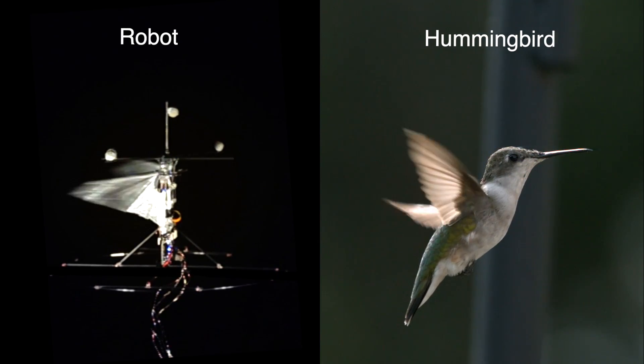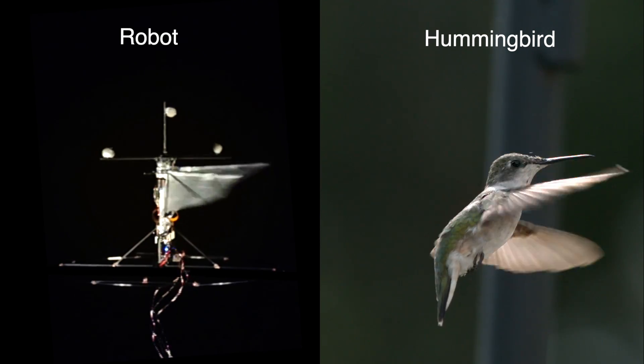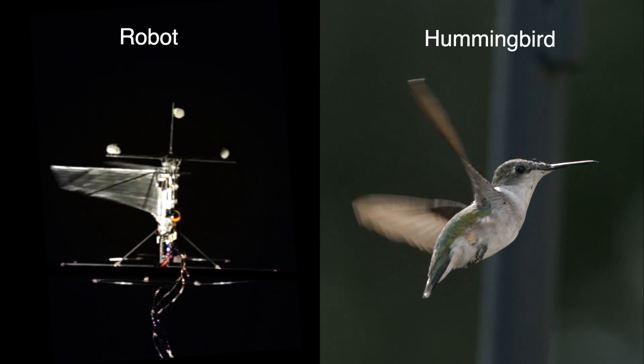The robot is actuated by two independently controlled motors that drive the wings to achieve six degrees of freedom flight control.